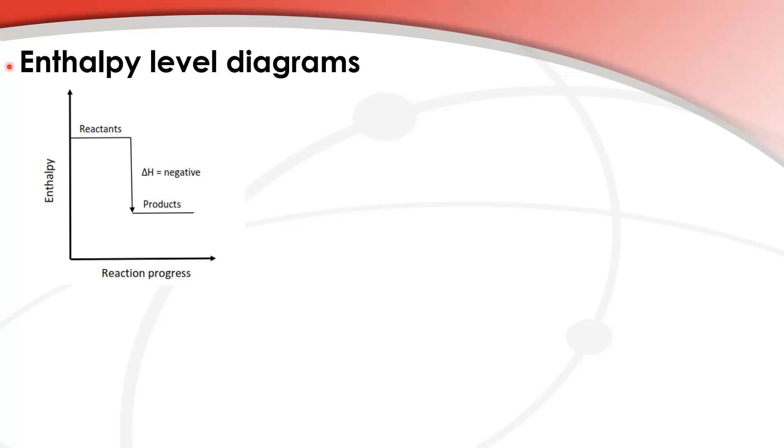Here is an enthalpy level diagram for an exothermic reaction. As you can see, the reactants are at a higher enthalpy than the products. This means that the products are more energetically stable than the reactants because they have a lower enthalpy. You can also see that the delta H for the reaction is negative. That is because heat is released in an exothermic reaction.